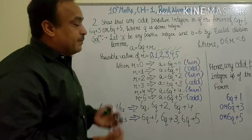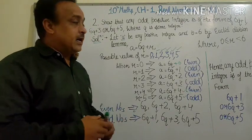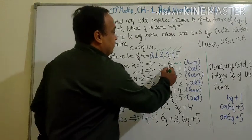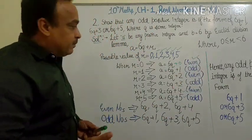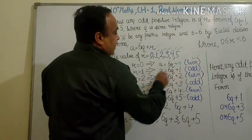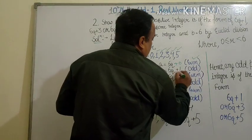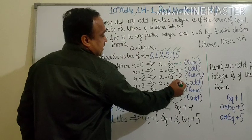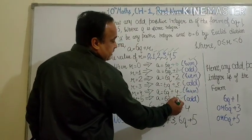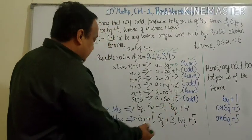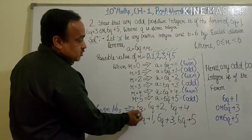Now if we use even and odd, you can see 6q is even. The number which is divisible by 2 is called an even number. If we add 1 to it, it becomes odd. Similarly, 6q+2 is even, 6q+3 is odd, 6q+4 is even, 6q+5 is odd. So if we separate them, which are the even numbers?